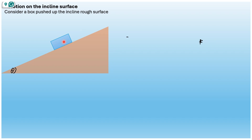Remember, this box can slide down and it can also be pulled up. In this case, the box is being pulled up, so an applied force — a certain force — has been applied to push the box up. We are told that this is a rough surface, meaning that the frictional force will also be present.